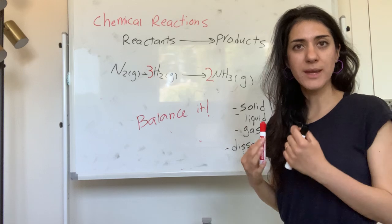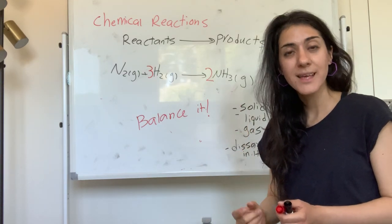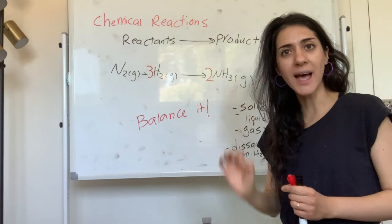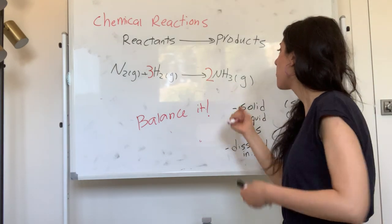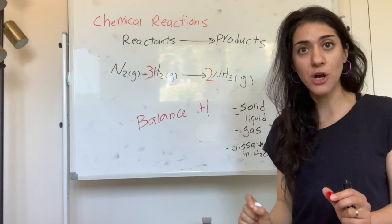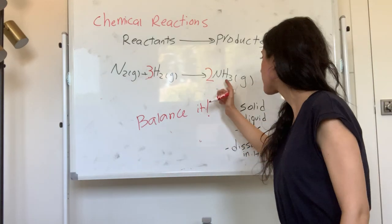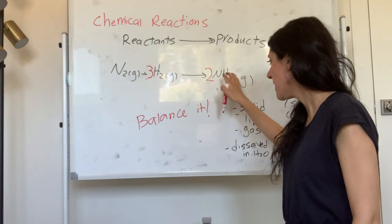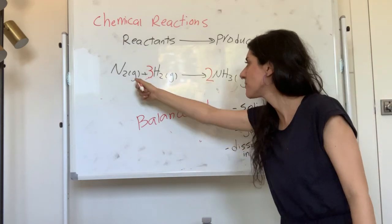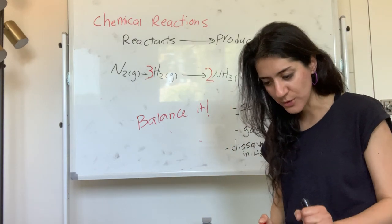Again, every time I give you a chemical equation, the first thing you need to do is balance it. Don't assume it's balanced — make sure you have the same number of atoms on both sides. When we balance it, we balance by adding coefficients. Never change the compound. You cannot mess with the formulas. NH3 is a balanced neutral compound — you can't mess with that. The only thing you can do is put a coefficient in front of it.